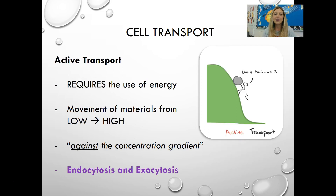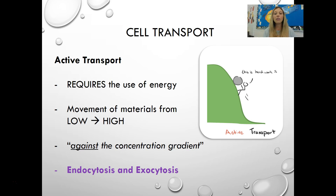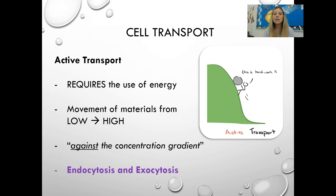Active transport is the opposite — it requires energy because it's what molecules don't want to do. They do not want to move from a low concentration to a higher concentration. We call that going against the concentration gradient, like swimming upstream. This guy's saying this is hard work, moving that rock up the hill. Moving from low to high is active transport and requires energy. Our examples of active transport are endocytosis and exocytosis.